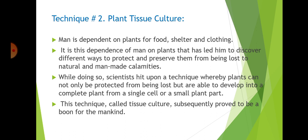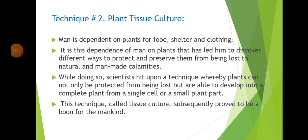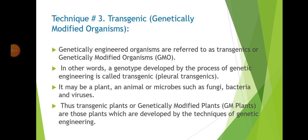The second technique of biotechnology is plant tissue culture. Man is dependent on plants for food, shelter, and clothing, and this dependence has led him to discover different ways to protect and preserve them from natural and man-made calamities. The third technique is transgenic, or genetically modified organisms.